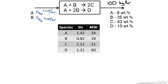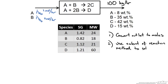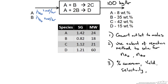Let us write out our strategy. First, as just mentioned, we need to convert our outlet stream to moles. This will allow us to use the extent of reaction method to do our material balances. Second, use the extent of reaction method to solve for Na0 and Nb0. Then lastly we calculate what the problem asks: the percent conversion, the yield, the selectivity, and the percent excess. We want to make sure we answer all four of these.